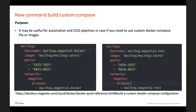The first change is the new command: build-custom-compose. It will be helpful for situations when you need to use specific images or want specific settings in the Docker Compose file. These two screenshots illustrate how it works — the left picture is the default compose file, and using this option you can set a custom port or host and get a configuration like the one on the right picture.